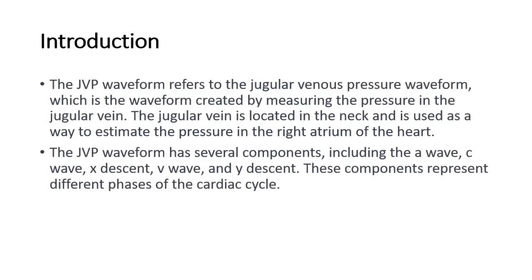The JVP waveform refers to the jugular venous pressure waveform, which is the waveform created by measuring the pressure in the jugular vein. The jugular vein is located in the neck and is used as a way to estimate the pressure in the right atrium of the heart.